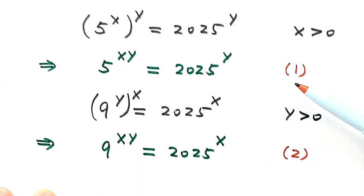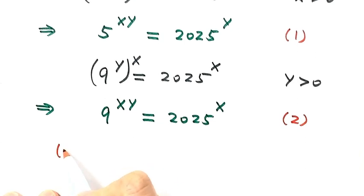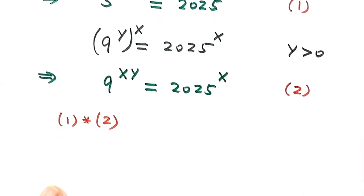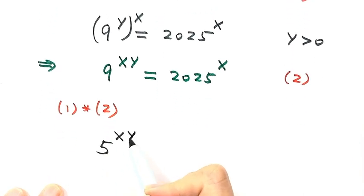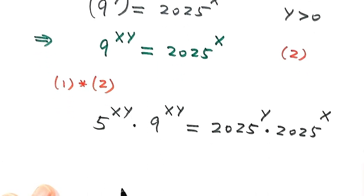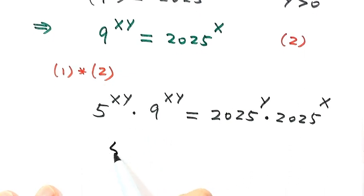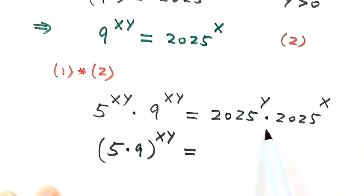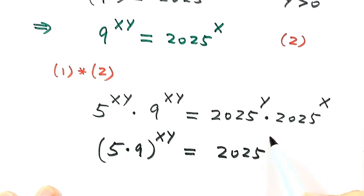Next, we take equation 1 times equation 2, multiplying these two together. The left-hand side is 5 to the power of xy times 9 to the power of xy. The right-hand side is 2025 to the power of y times 2025 to the power of x. Because these two terms on the left have the same exponent and it's a multiplication, we can combine them as 5 times 9 to the power of xy. On the right, the two terms have the same base, so we get 2025 with the two exponents adding together, giving x plus y.